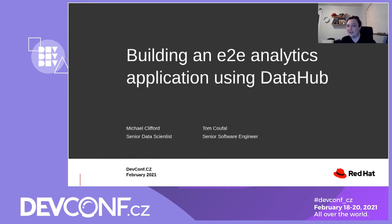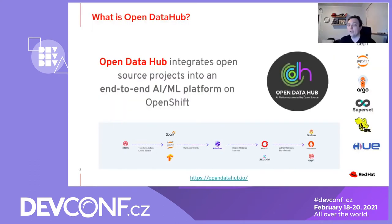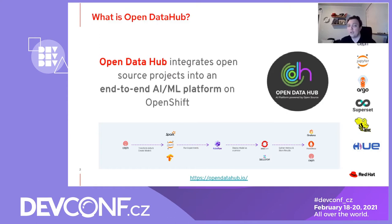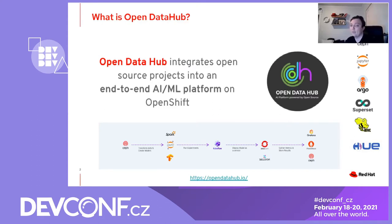If we're going to talk about building an end-to-end analytics application using DataHub, let's first make sure everyone knows what DataHub is. The Open DataHub is an open source project developed by members of our team in the office of the CTO. Its goal is to help integrate multiple open source projects into an end-to-end AI/ML platform for OpenShift — a blueprint for building an AI-as-a-service platform using Red Hat's Kubernetes-based OpenShift container platform and Ceph storage.